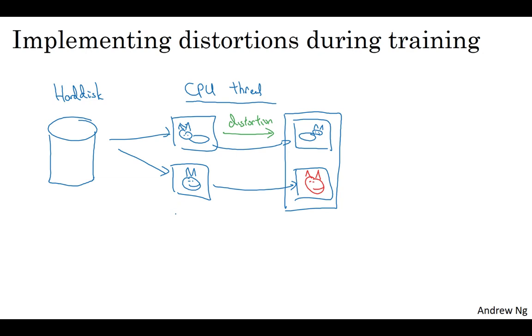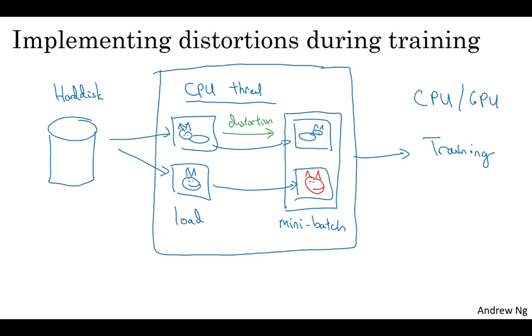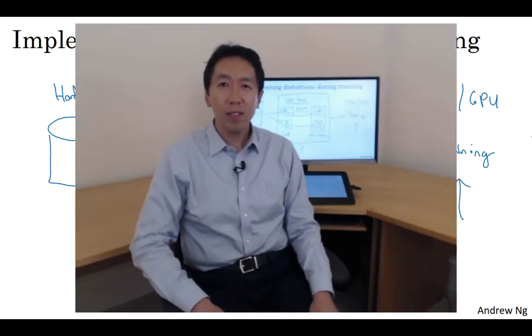And so, your CPU thread is constantly loading data as well as implementing whatever distortions are needed to form a batch or mini-batches of data. And this data is then constantly passed to some other thread or some other process for implementing training. And this could be done on the CPU or really increasingly on the GPU if you have a large neural network to train. So a pretty common way of implementing data augmentation is to have one thread or multiple threads that is responsible for loading the data and implementing distortions, and then passing that to some other thread or some other process that then does the training. And often, this and this can run in parallel.